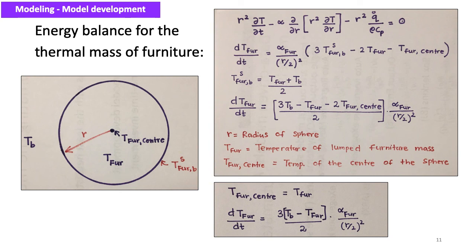This leads to a final simplified equation for the energy balance of furniture. R represents the radius of the sphere; T_F is the temperature of the lumped furniture mass; and T_F_center is the temperature at the center of the sphere.